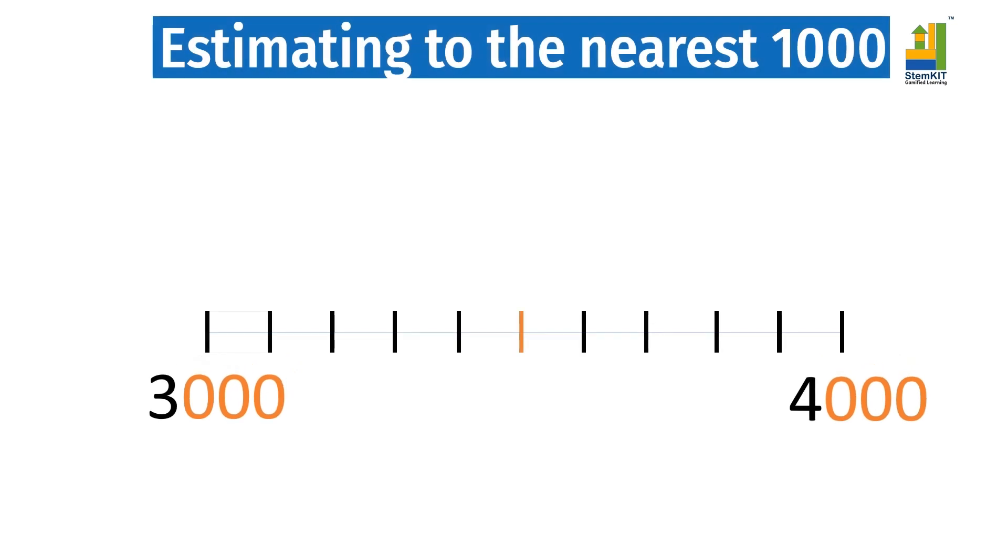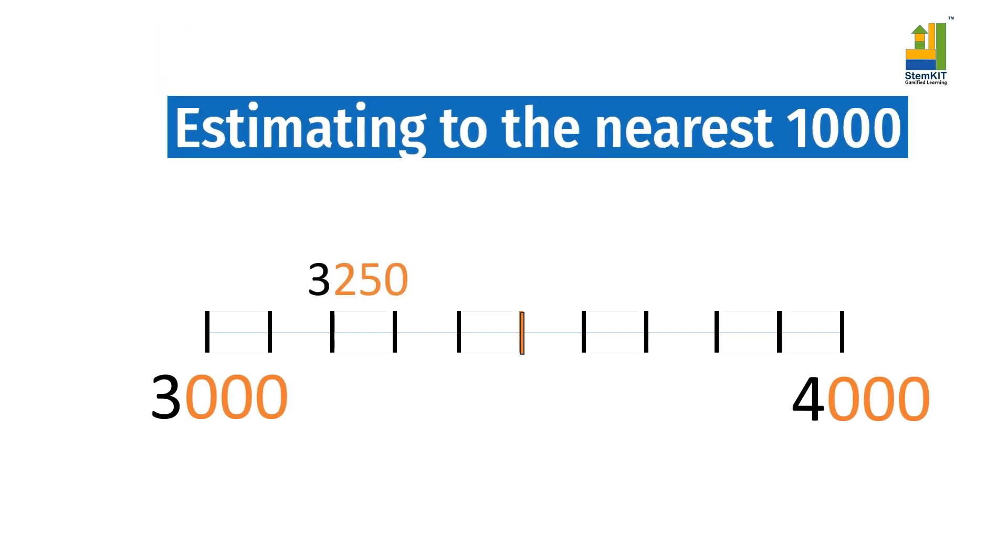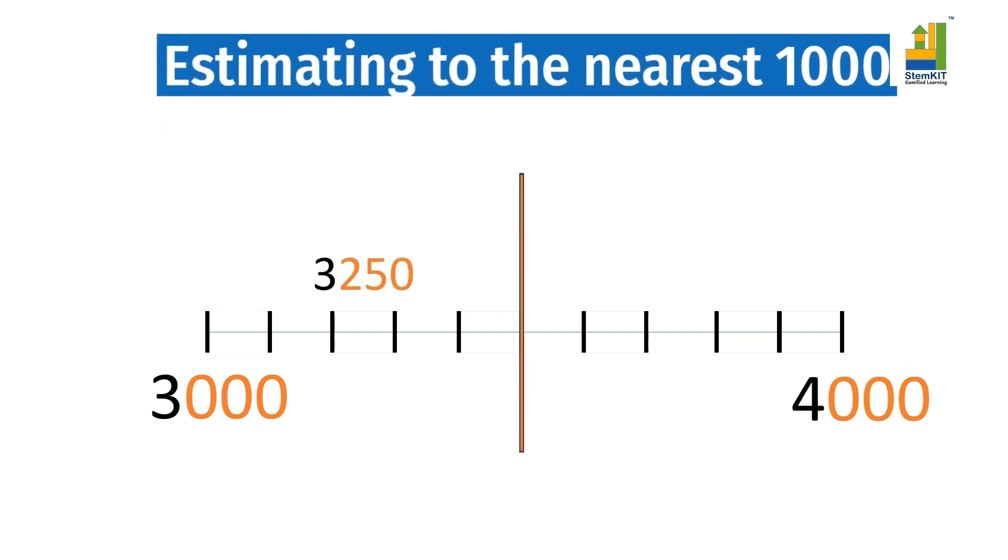Let us take the lower and upper thousands on the number line. Now, let us take the number three thousand two hundred and fifty on the number line. Notice the midpoint.